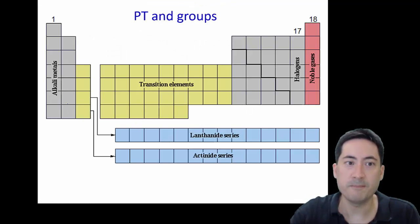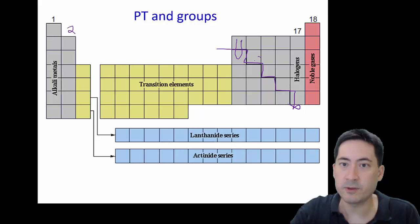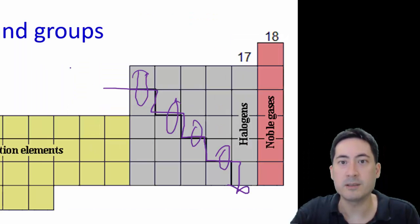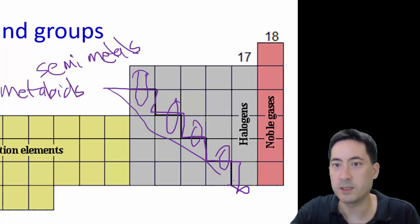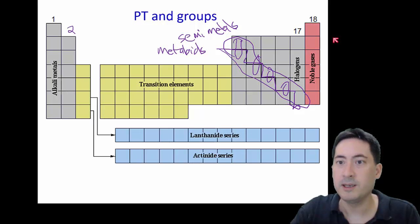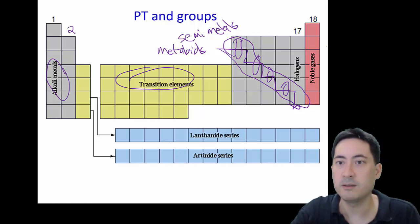Also be aware that if you draw a staircase line — across, down, across, down, across, down — and then go up and down from those horizontal lines, those are the semi-metals or metalloids. I think I've seen one exam question asking that you know what those are — that was in a recent paper, actually. So I would extremely stress knowing alkali metals, transition metals, halogens, and noble gases.